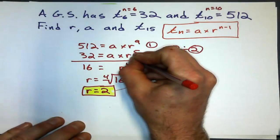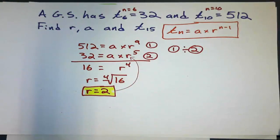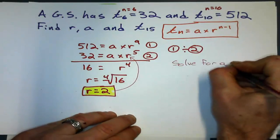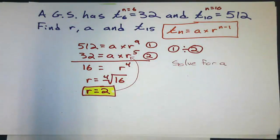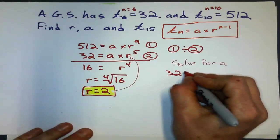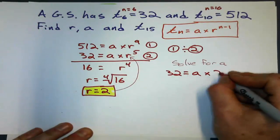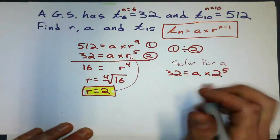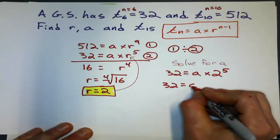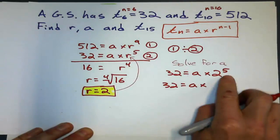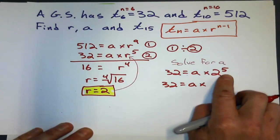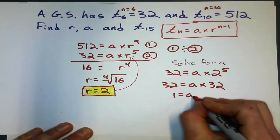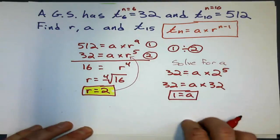I'm going to take that common ratio and substitute it back in to solve for the first term a. So 32 equals a times 2 to the 5th. I just have to simplify 2 to the 5th — wait, 2 to the 5th is 32. So the first term is 1, once again.